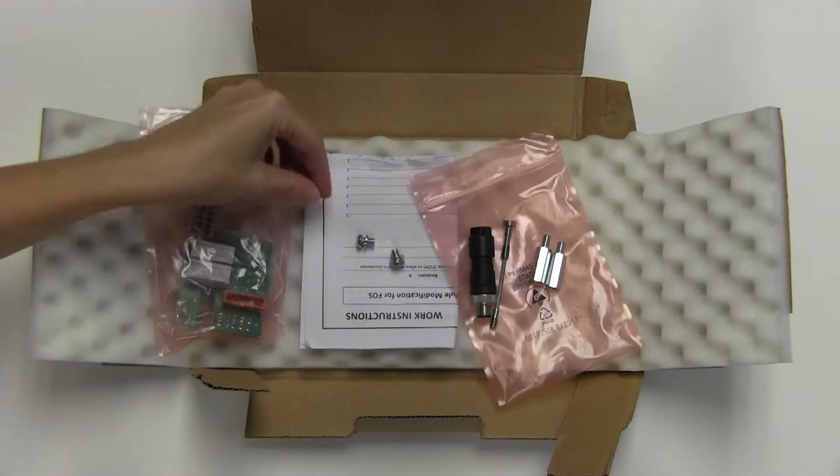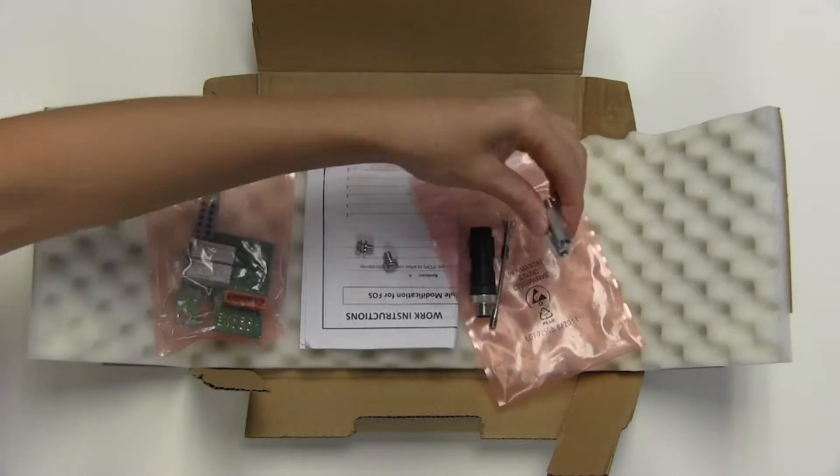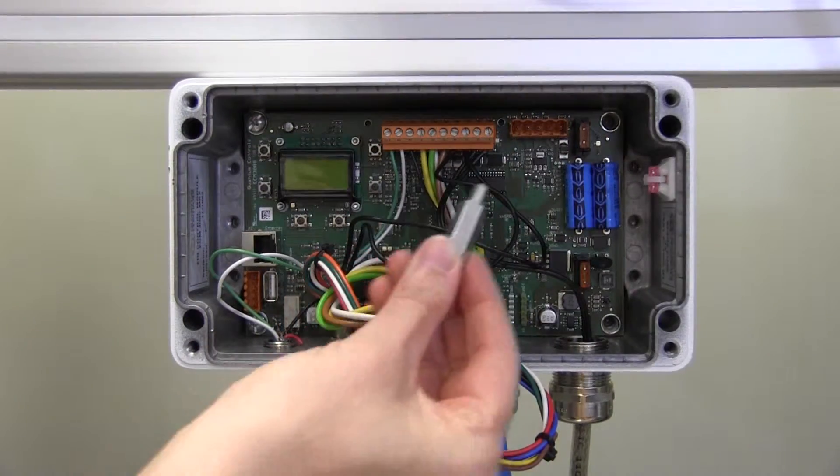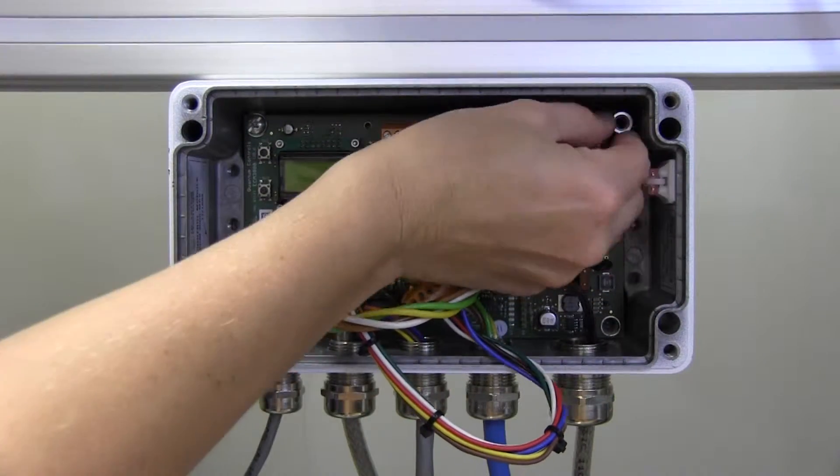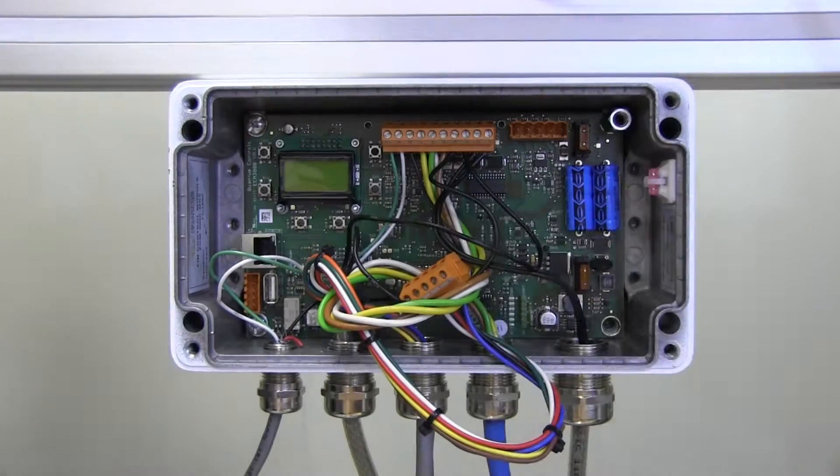Set these screws aside for reuse. By hand, install the two provided standoffs in place of the two screws. These only need to be installed finger tight.